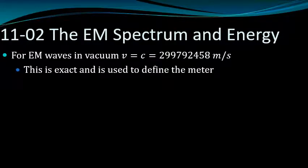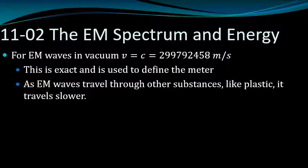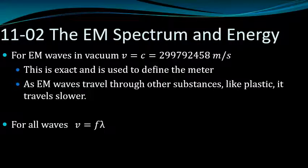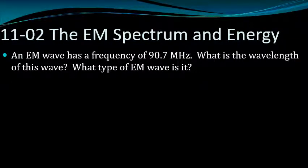As electromagnetic waves travel through other substances like plastic, they travel slower. For all waves, speed equals frequency times wavelength. An electromagnetic wave has a frequency of 90.7 megahertz. What is the wavelength of this wave and what type of wave is it?